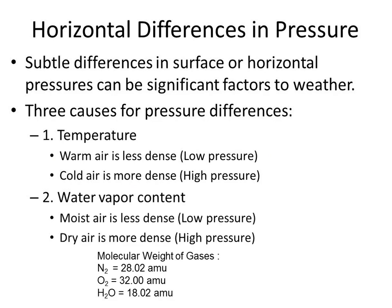The second factor is moisture — and this is counterintuitive. On a muggy day, the air feels thick, but moist air is actually a lower pressure. Dry air has a higher pressure. The reason is that water vapor weighs less than nitrogen or oxygen. So: moist air equals low pressure, dry air equals high pressure.